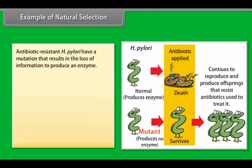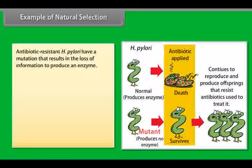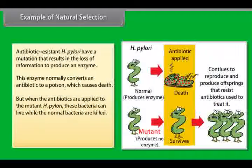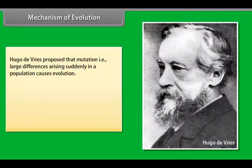An example of natural selection is antibiotic-resistant H. pylori, which have a mutation that results in the loss of information to produce an enzyme. This enzyme normally converts an antibiotic to a poison which causes death. But when antibiotics are applied to the mutant H. pylori, these bacteria can live while the normal bacteria are killed.